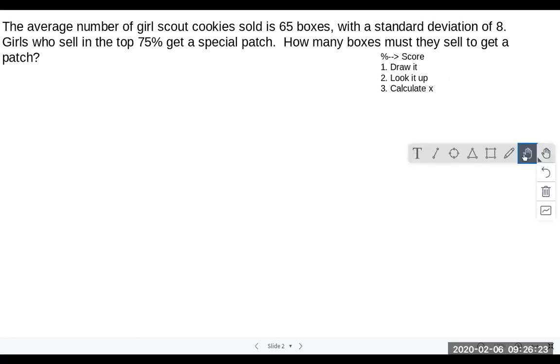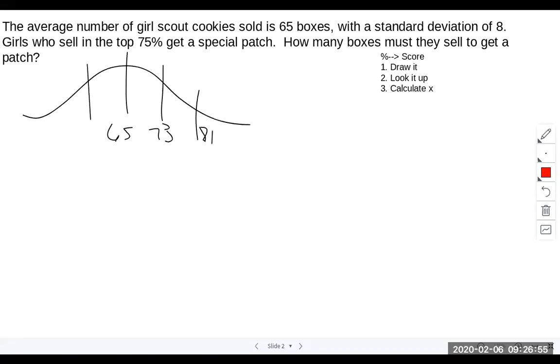So the first thing we want to do is draw it. So we'll put this in black. When we're drawing this, we want to make sure we get all of our points clear. So here I have a distribution and I have 65 boxes here. I'm going to break out my calculator, just trying to remind you that you don't need to do this in your head if you don't want to. So then this would be 73, 73 plus 8 is 81.